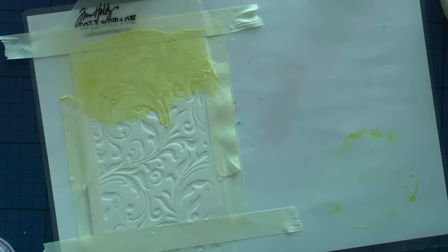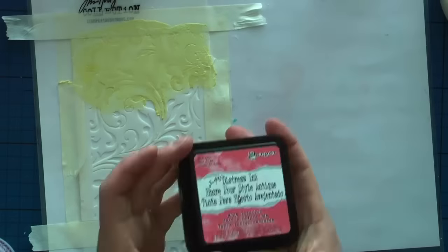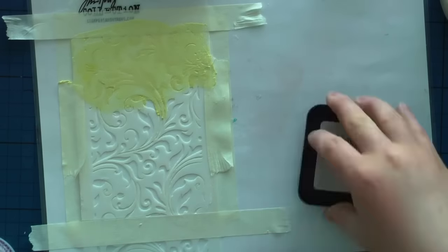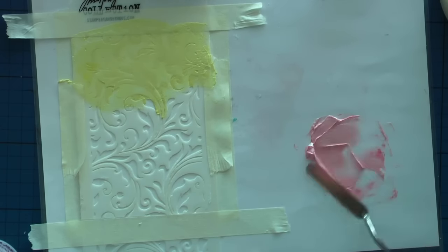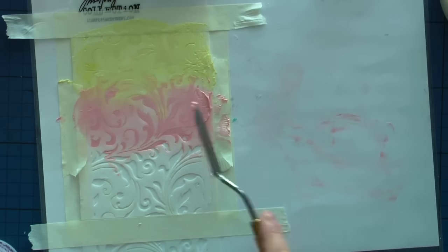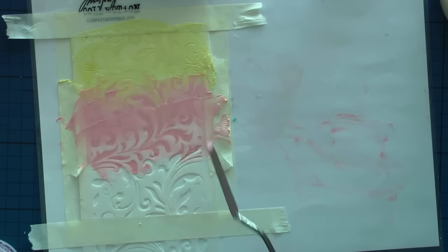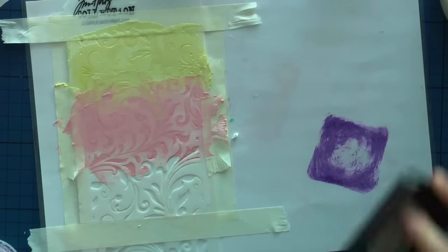You must remember that when you mix embossing paste with distress inks or any inks, the color will become more pastel. In this case, I really loved it. I like how these vibrant colors became softer and more delicate, and they nicely blended together while I was adding each color to my stencil.